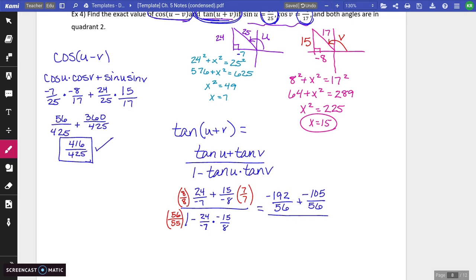So 105. And then, oops, I miswrote that. That should be a 56. So 56 over 56 minus, okay, I've got a negative fraction times another negative fraction. So that's going to go positive. But I'm still subtracting that result. And that's going to be a 360 over 56. Okay, so this becomes a negative 297 over 56.